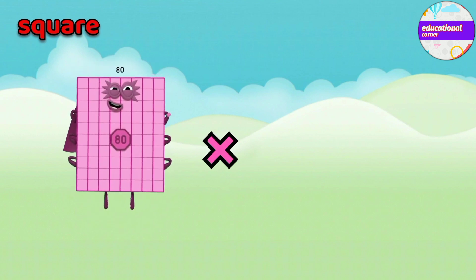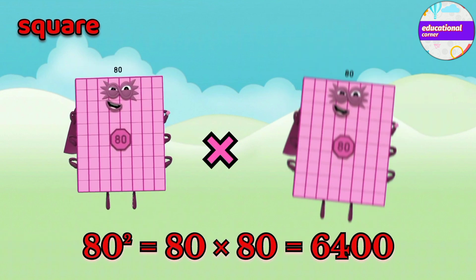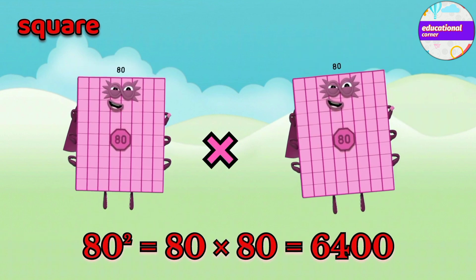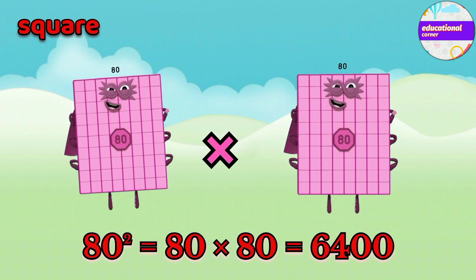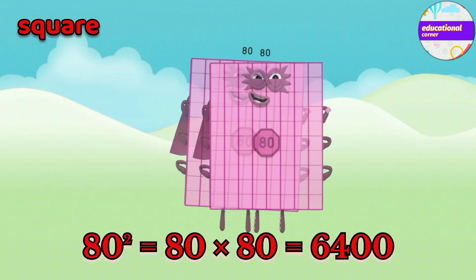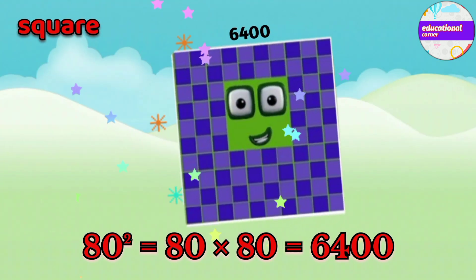80 multiply by 80. The square of 80 is 6400.